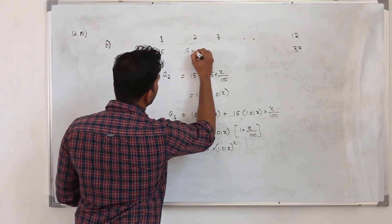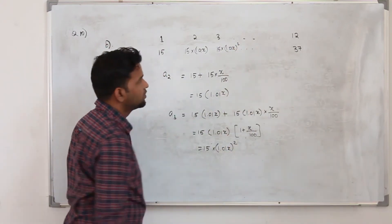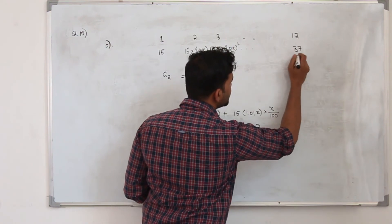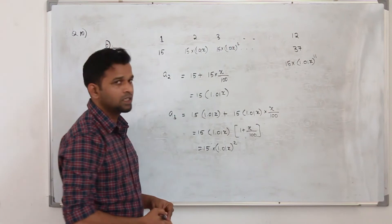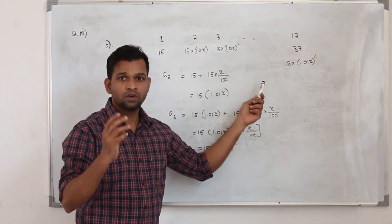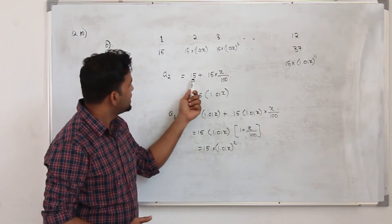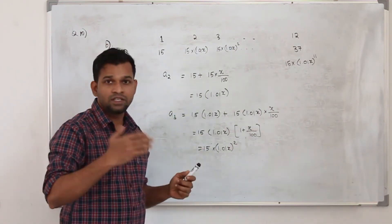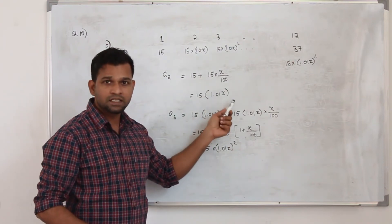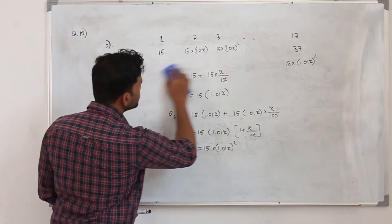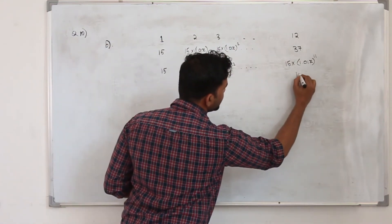Week 12 gives 15 times r to the power 11 equals 37, so r to the power 11 equals 37 upon 15. The 5th term is AR to the power 4. The common ratio r works out to approximately 1.086. So we need 15 times r to the power 4 to find the week 5 distance.